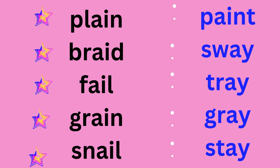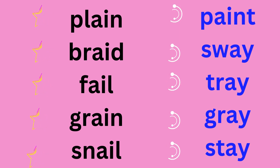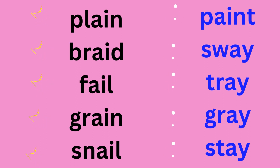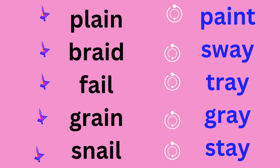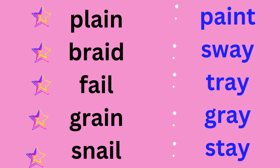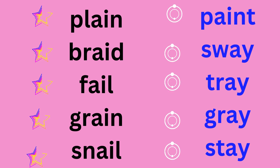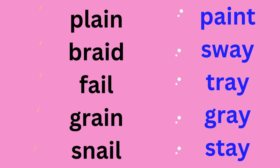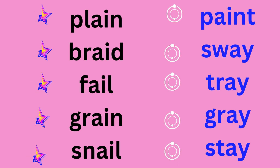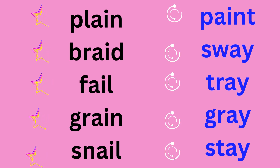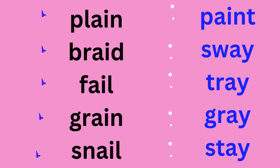Blue column: Paint — P-A-I-N-T, paint. Sway: S-W-A-Y, sway. Tray: T-R-A-Y, tray. Gray: G-R-A-Y, gray. Stay: S-T-A-Y, stay.